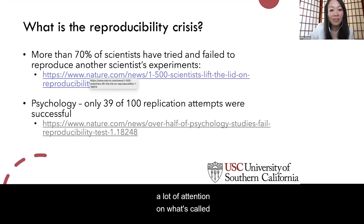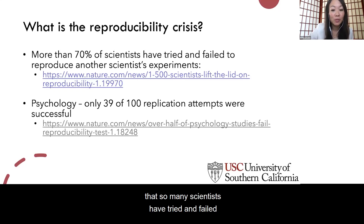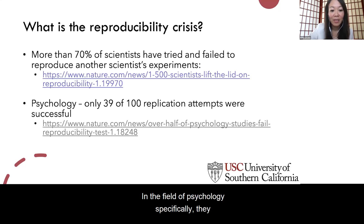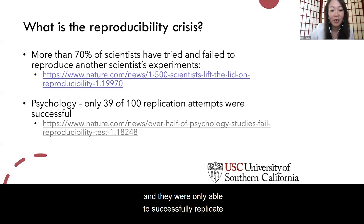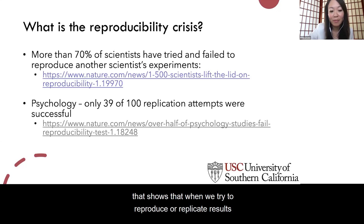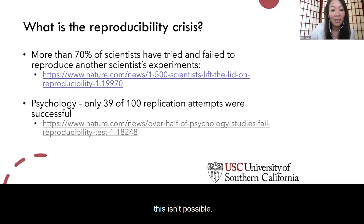Right now there's a lot of attention on what's called the reproducibility crisis — the fact that so many scientists have tried and failed to reproduce another scientist's experiments. One report from Nature said that over 70% of scientists have tried and failed to reproduce another scientist's experiments. In the field of psychology specifically, they set out to replicate 100 different studies and were only able to successfully replicate the results of 39. This probably isn't news to many people, and even within rehabilitation research, replicating previously published results is often not possible.